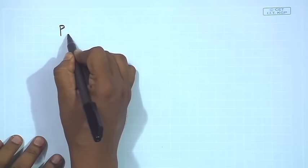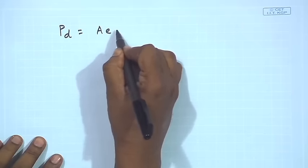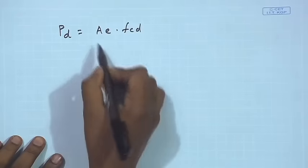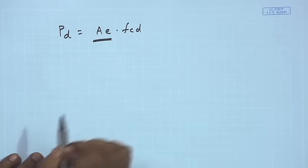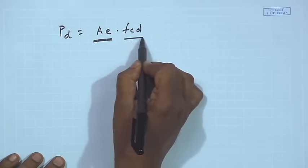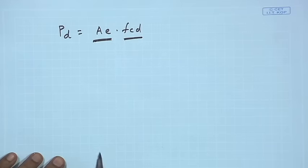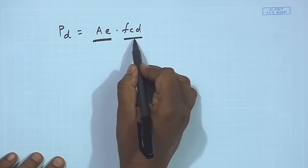Then what will be the dimension of the section, the size — how do we decide? Here there is an iterative process we have to follow. Because if we see the design strength calculation, the design compressive force Pd is equal to Ae into Fcd. Now we do not know Ae because we do not know the dimension of the section, so the effective area is unknown.